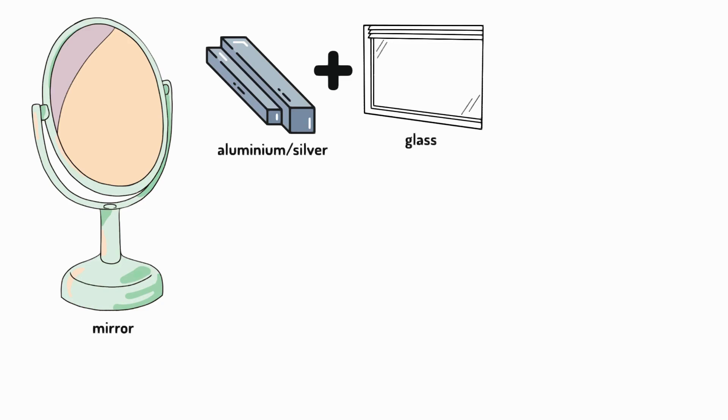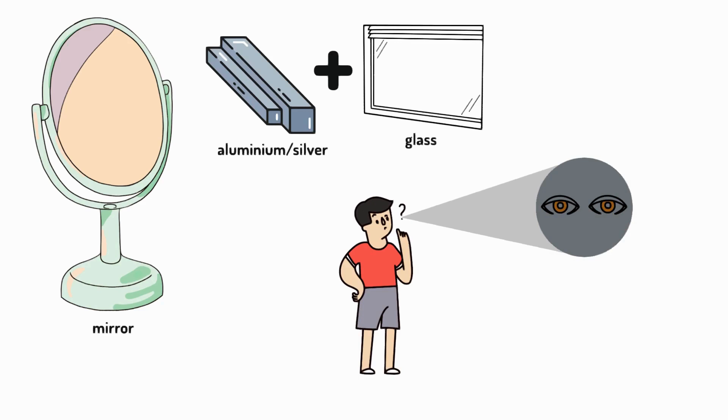A common misconception learners have is that our eyes are a light source. If this was true, we'd be able to see in a completely darkened room. And well, we'd be superhuman.